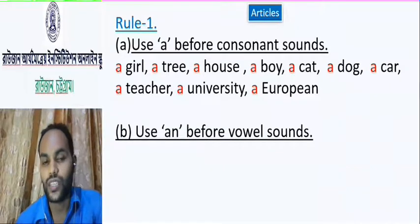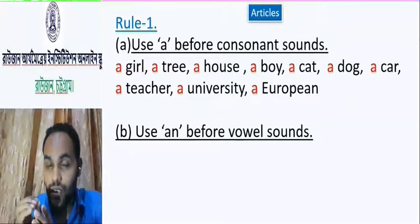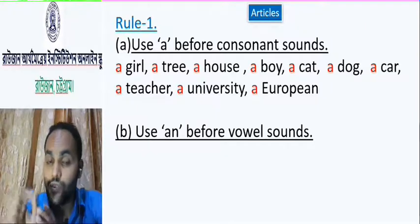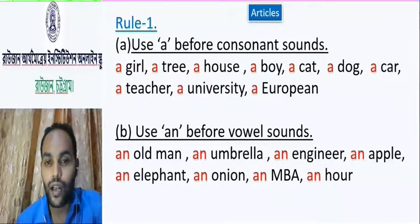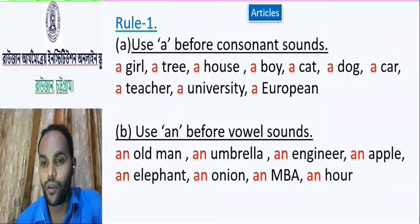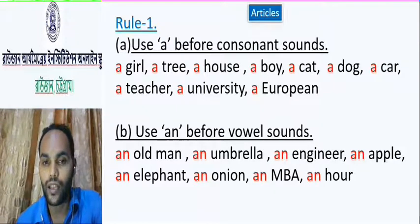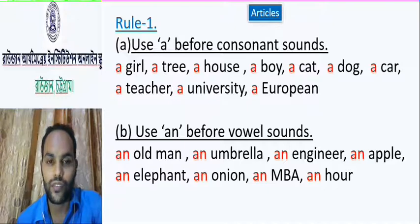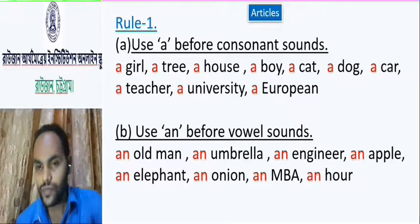Rule number two: Use 'an' before vowel sounds. When we get a vowel sound, we will put 'an'. Here are some examples: old man, umbrella, engineer, apple, elephant, onion, MBA, hour. Look here — 'old' starts with an 'o' sound; 'umbrella' starts with an 'u' sound; 'engineer' starts with an 'e' sound; 'apple' — 'a'; 'elephant' — 'e'; 'onion' — 'o'; 'MBA' — 'em' sound; 'hour' — 'ow' sound.